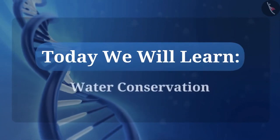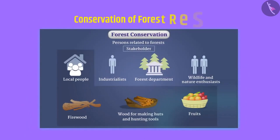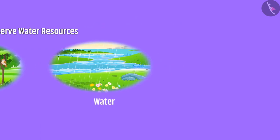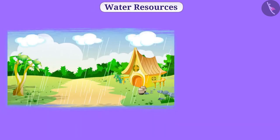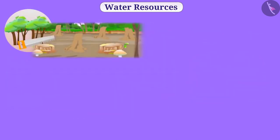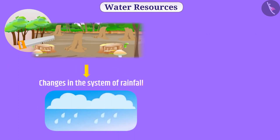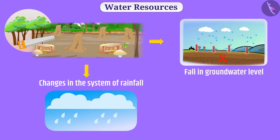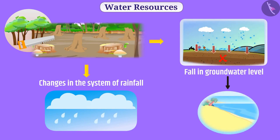Today we will learn about water conservation. Like forests, water is also an important resource for us. In our country, rainfall mainly depends on the monsoon, so the duration of rainfall is limited to a few months. Due to deforestation, there are changes in the system of rainfall. Because of the absence of trees, rainwater cannot go into the ground — it drains and merges into the sea.